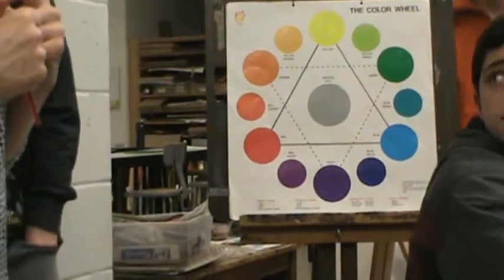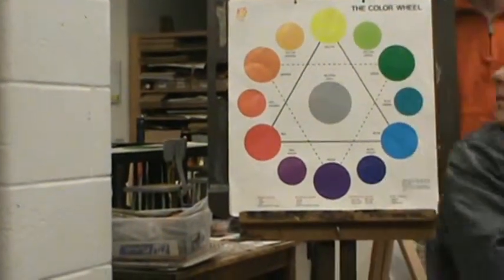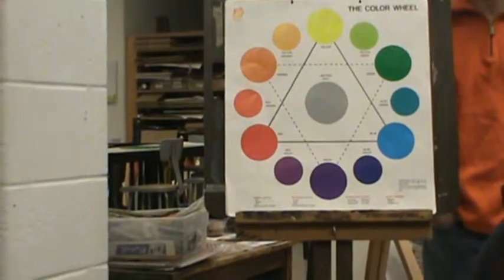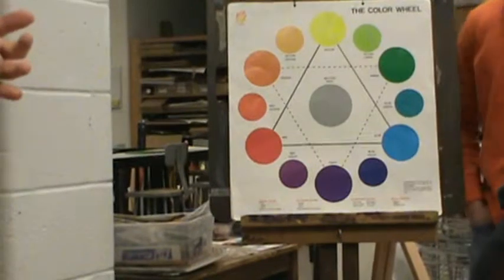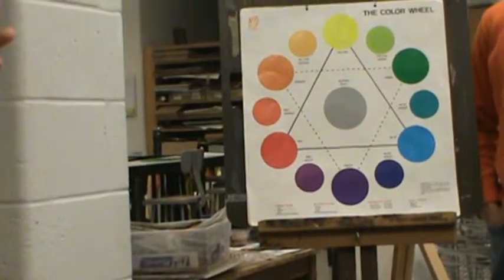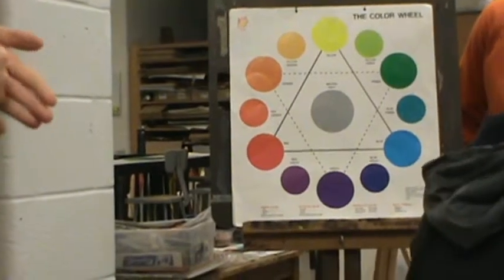Analogous is a color relationship where there's two colors on the color wheel that are next to each other. For instance, yellow's analogous colors are orange and green, blue's analogous colors are green and violet, and red's are orange and violet.